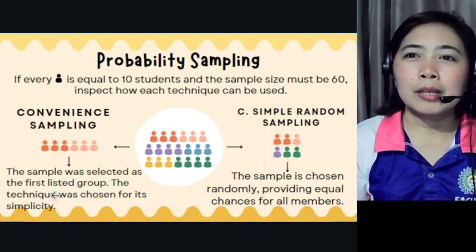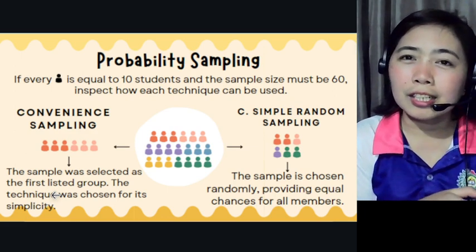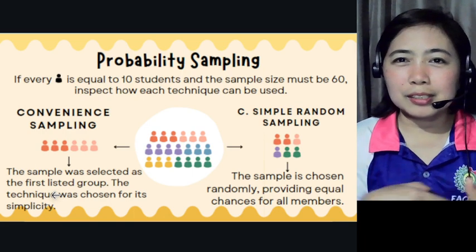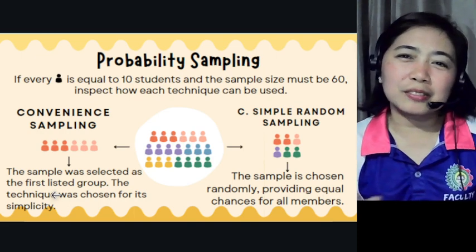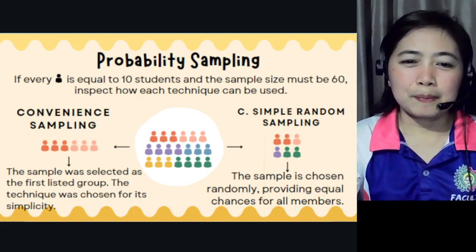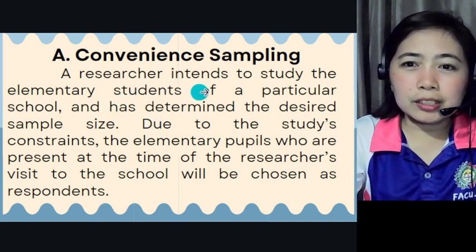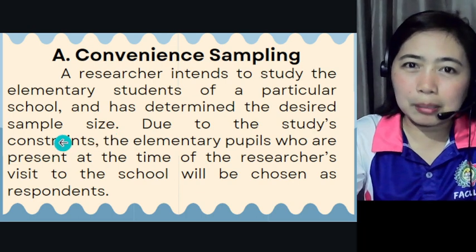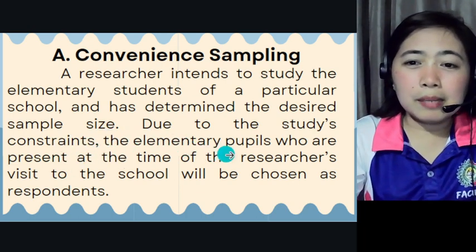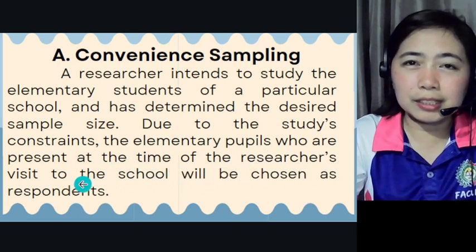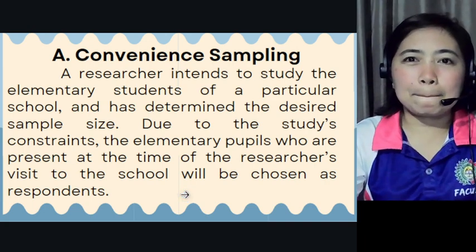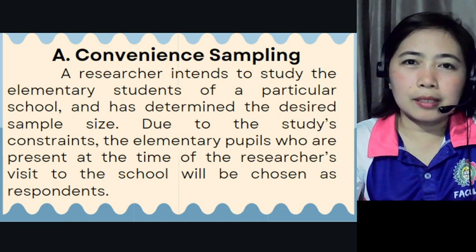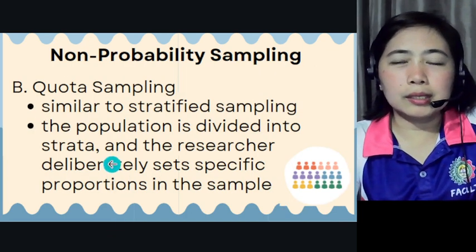For convenience sampling, the first 10 on the list might receive a benefit — like in an ayuda distribution where the first 10 receive 10 kilos of rice, and 11 to 20 receive only 5 kilos. That's convenience sampling. Another example: a researcher intends to study elementary students of a particular school and selects the elementary pupils present at the time of the researcher's visit as respondents — whoever is available that day.